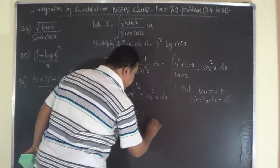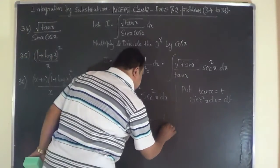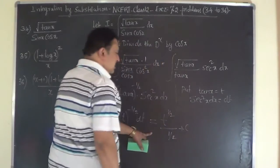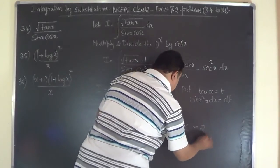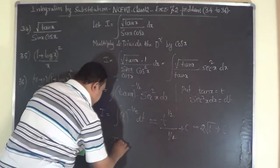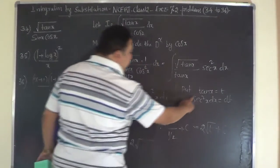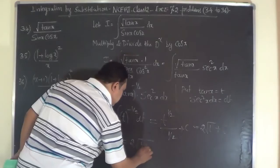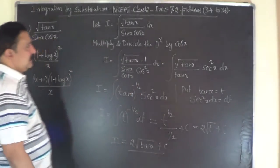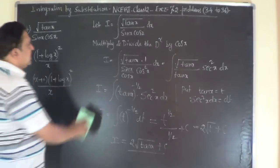Integrating, t to the power of minus half gives t to the power of minus half plus 1 divided by minus half plus 1, which equals 2 root t plus c. Therefore i equals 2 root tan x plus c. It is a very simple problem.